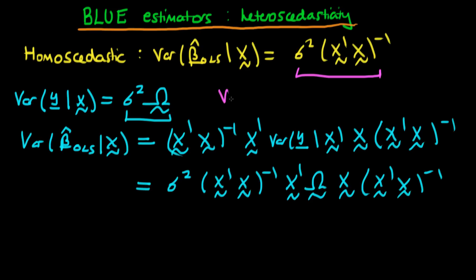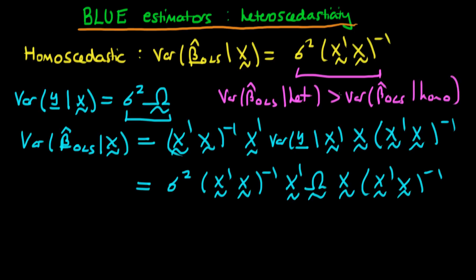It is actually possible to show that the variance of β̂_OLS in the presence of heteroscedasticity is actually greater than the variance of β̂_OLS in the presence of homoscedasticity. So if you assume homoscedastic errors — as most statistical software programs do — you will actually underestimate the true variance of your estimators if heteroscedasticity is present. What these software programs do is they actually estimate Ω, which then allows them to produce an estimate of the variance of β̂_OLS that you can use for inference.